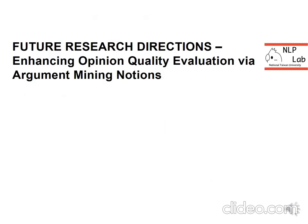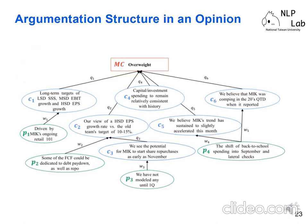Finally, we propose some future research directions for enhancing opinion quality evaluation. We think that argument-minded notions can be applied in this direction. An investor's opinion can be transferred into an argumentation structure — after detecting the premise and related claims, we can use a graph to form the relations between argumentation units. This kind of structure has been shown useful in persuasive essay estimation and student argumentative essay scoring, but there are few explorations in the financial domain. With the proposed dataset, we can start to explore forming the argumentation structure of an investor's opinion.